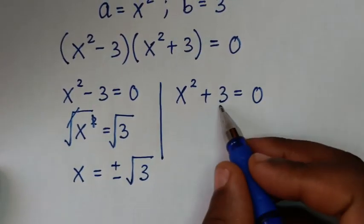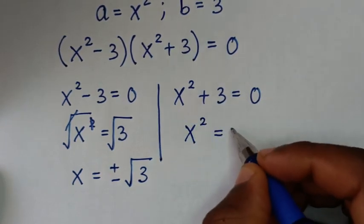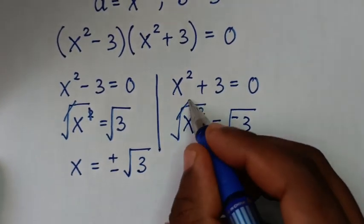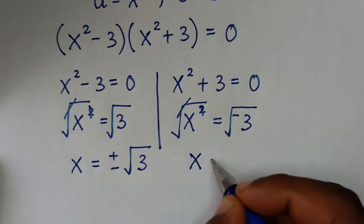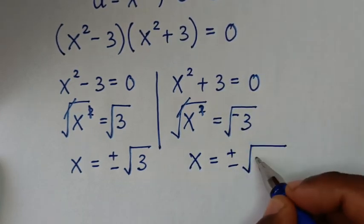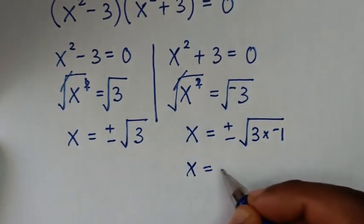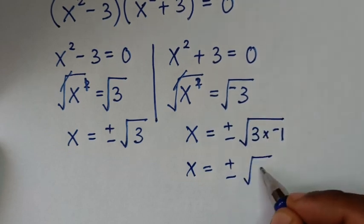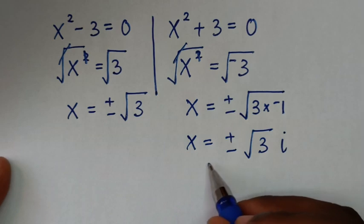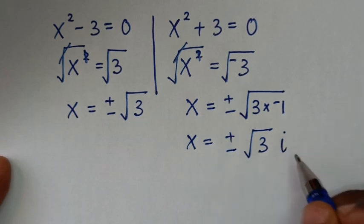From the second solution, we take 3 to the other side, giving x-squared equals negative 3. Applying square root to both sides, the square root cancels the square, so x equals plus or minus square root of negative 3, which is the same as square root of 3 times negative 1. Therefore x equals plus or minus square root of 3 times i, where i is the imaginary unit. So we have two complex solutions because of the plus or minus and the imaginary number.